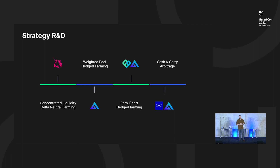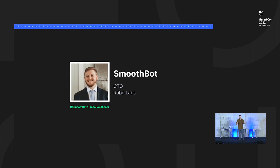Here's at a glance some of the strategies we've got on the cards for the future. We're really excited about the future of delta-neutral strategies in DeFi — I think it's going to be part of yield in the coming years. Thanks for listening. Come check us out at robo-vault.com. You can find me on Twitter at Smoothbots. We're also part way through a seed round, so if you're interested in being involved, hit me up on Twitter.